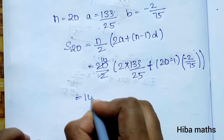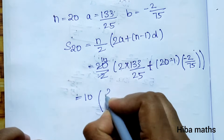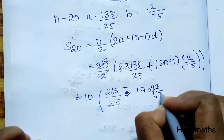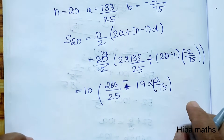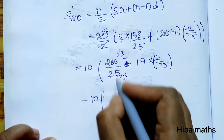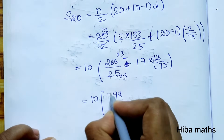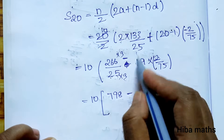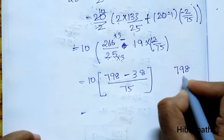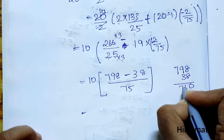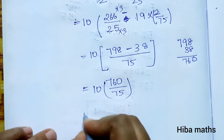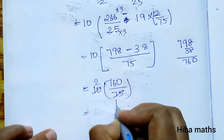Continuing to compute S(20): 10 into 266 by 25 gives 2660 by 25, and 19 into minus 2 by 75 gives minus 38 by 75. Converting to a common denominator of 75: 2660 by 25 becomes 798 by 75. So S(20) equals 798 by 75 minus 38 by 75, which gives 760 by 75, and simplifying gives the final answer.